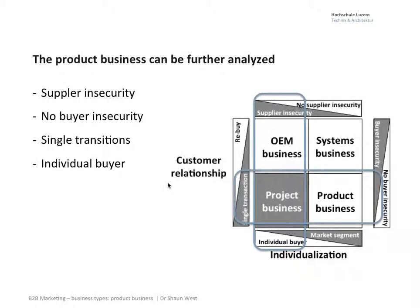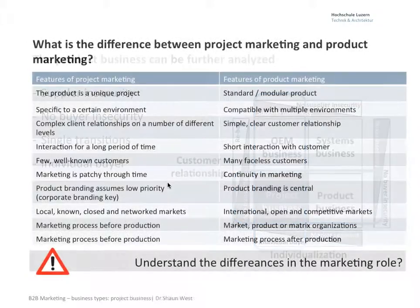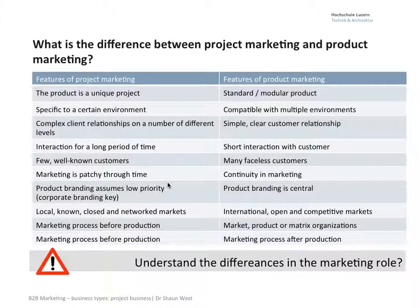Project business is different to the product business, different to OEM business, and different to systems businesses. Here we tend to build a big project — the London Olympics is a good example. We're going to see how it differs from product marketing and how we end up with a few customers that we interact with over the long lifetime of the project.